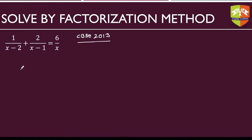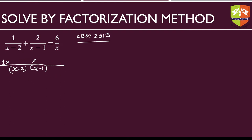To solve this, first take the LCM of the left-hand side, because both the x terms are in the denominator. The LCM of two monomials is simply their product. Write the numerator 1, then multiply by x minus 1 (obtained by dividing the combined denominator by x minus 2). Then add the second term with numerator 2 multiplied by x minus 2, giving 6 upon x on the right-hand side.